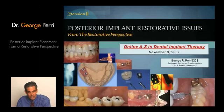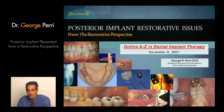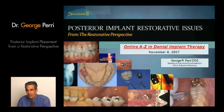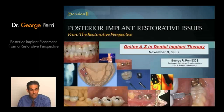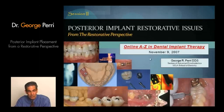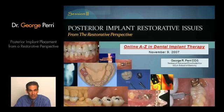Session two is about posterior implant restorative issues. In this area, we're not as concerned about aesthetics. We are concerned about function and force. We're concerned about the bruxing patient and the patient that puts a lot of load. We have anatomical issues like the mandibular canal, the mental foramen, sinuses, and the quality of bone. All those issues come into play in the posterior components, so we need to talk about those and evaluate our best techniques to maximize the success rates.